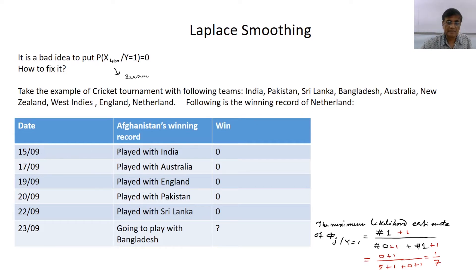These are the dates and Netherlands when played with India could not win, so 0. When played with Australia 0, when played with England 0, played with Pakistan 0, and it played with Sri Lanka and could not win either. Now the question is, what is the probability that it is going to play with Bangladesh and win?